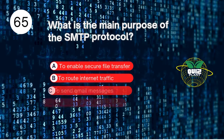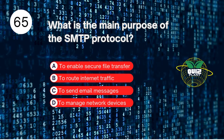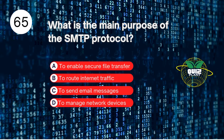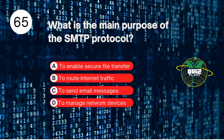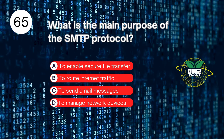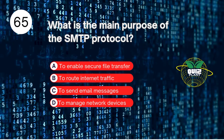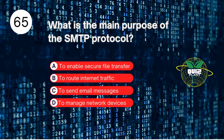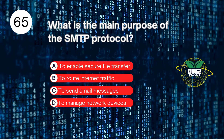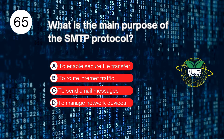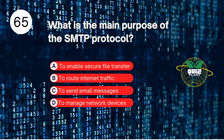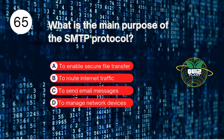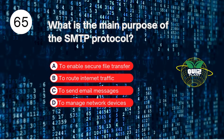Number 65. What is the main purpose of the SMTP protocol? A. To enable secure file transfer. B. To route internet traffic. C. To send email messages. D. To manage network devices. The answer is C. To send email messages.